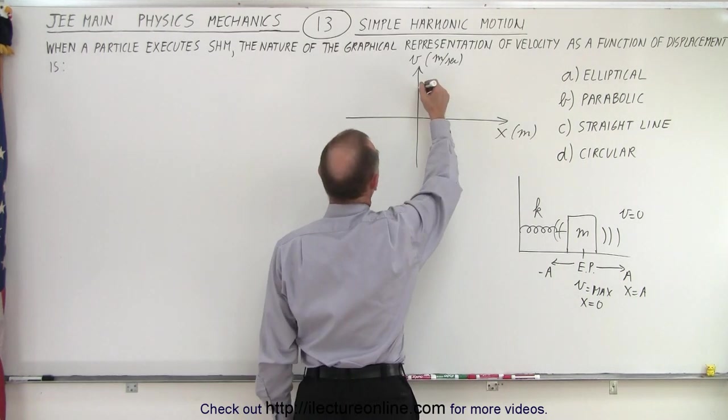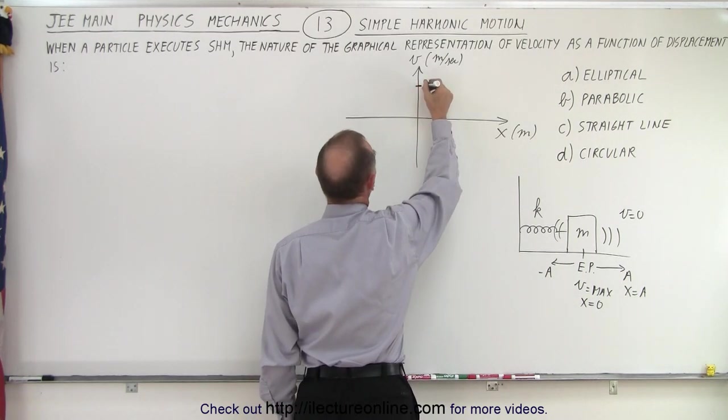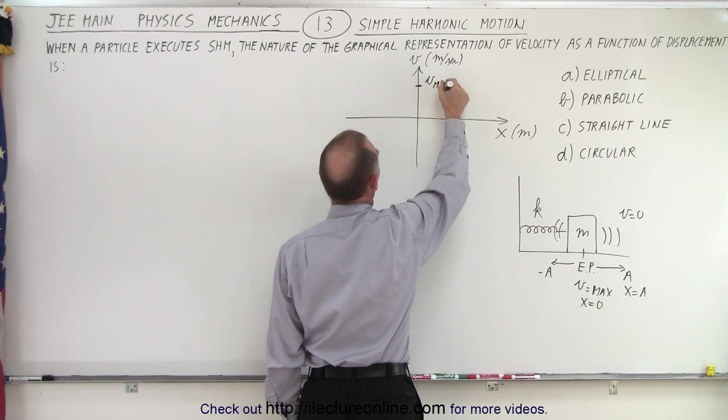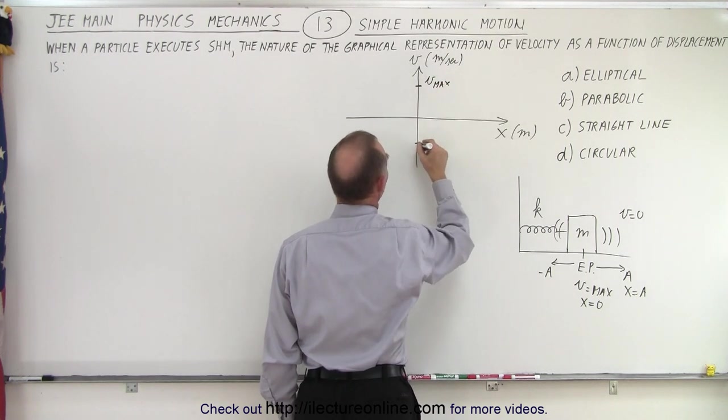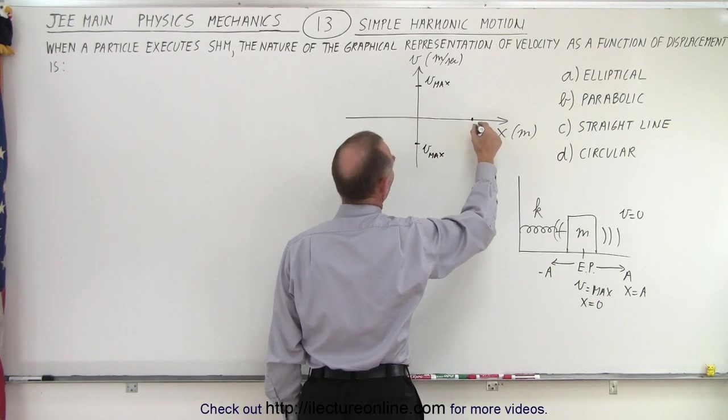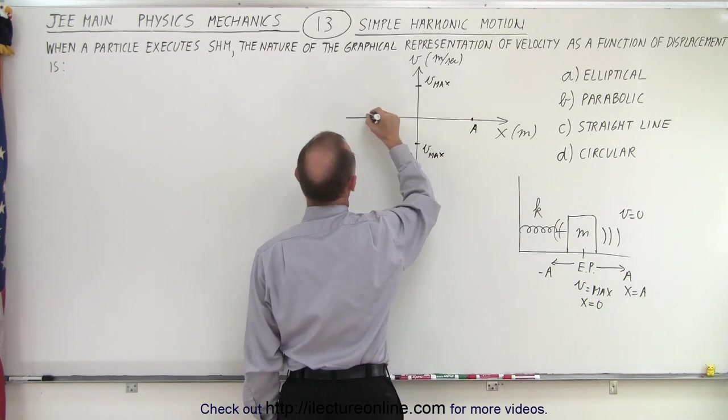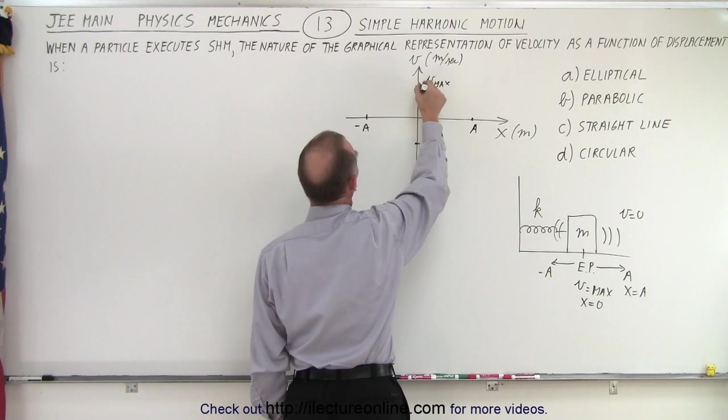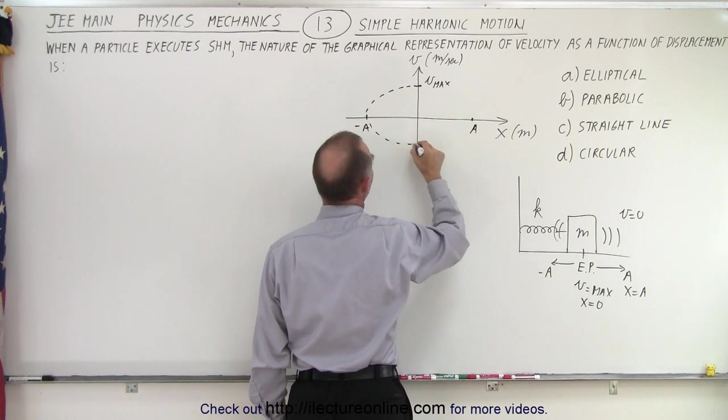So it looks like there would be a maximum velocity V max in the positive direction. Over here there would be V max in the negative direction. There would be a maximum displacement A and maximum displacement negative A. And so we would end up with something that looks like this.